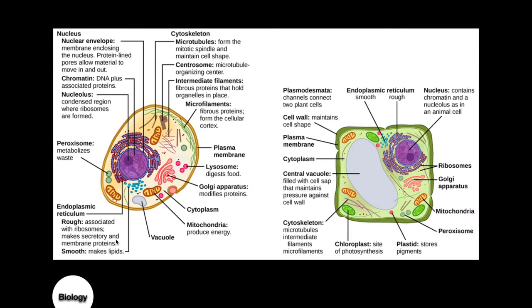Next up we have the Golgi apparatus, which is in charge of packaging and distribution. You could think of the Golgi apparatus as the UPS driver of the cell. Things created in the endoplasmic reticulum are transported to the Golgi body — also called the Golgi complex — where materials are modified, packaged for secretion, and sent out. Lysosomes are produced in the Golgi body and contain digestive enzymes.